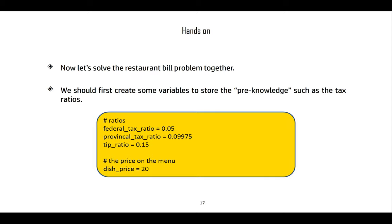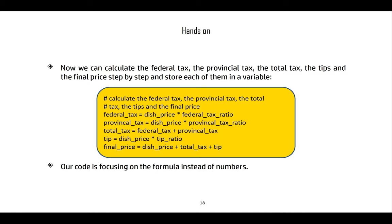Let's solve the restaurant bill problem together. First, create variables for the known values: federal_tax_ratio = 0.05, provincial_tax_ratio = 0.09975, tip_ratio = 0.15, and dish_price = 20. Now calculate and store: federal_tax = dish_price * federal_tax_ratio, provincial_tax = dish_price * provincial_tax_ratio, total_tax = federal_tax + provincial_tax, tip = dish_price * tip_ratio, final_price = dish_price + total_tax + tip.